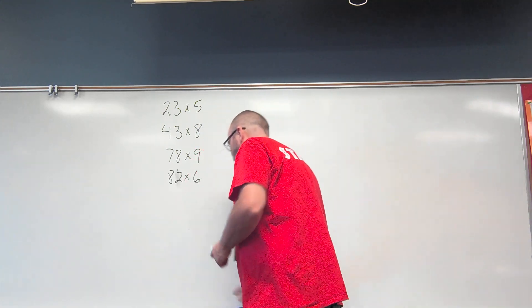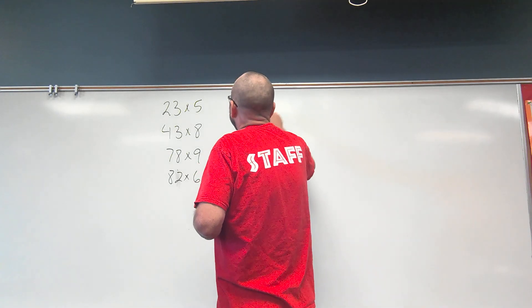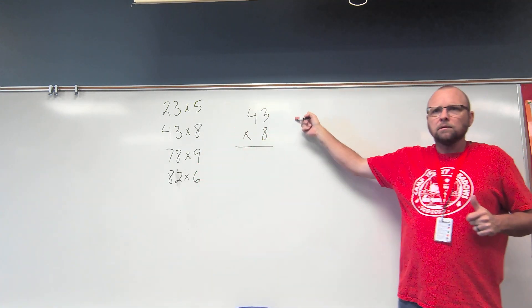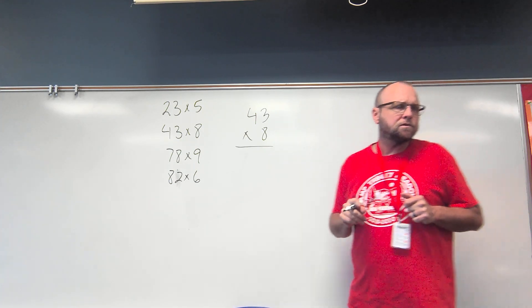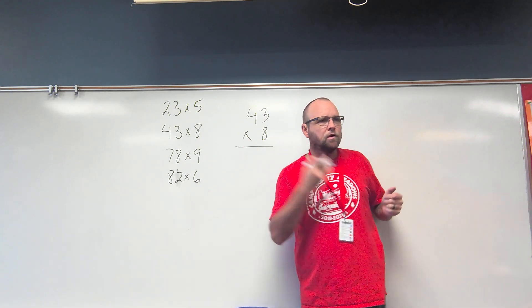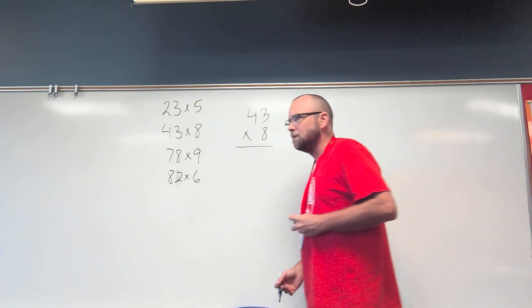43 multiplied by 8. Who remembers what these numbers are called? Factors. These numbers are factors. And the answer is called a product. Good. You guys are listening. I'm so proud.